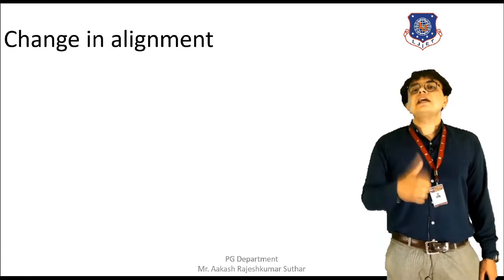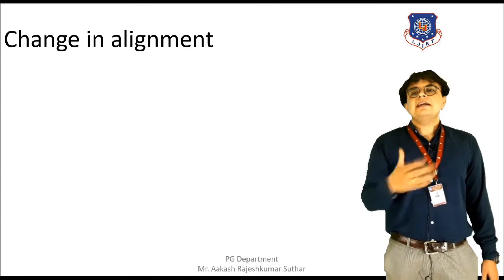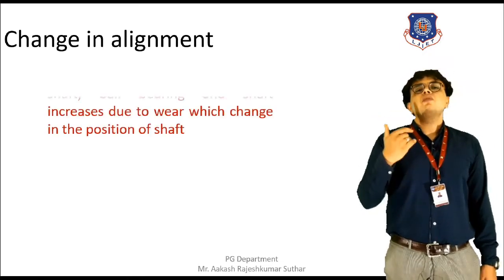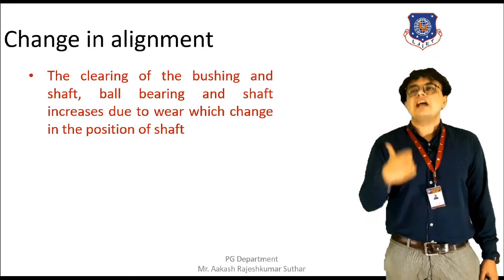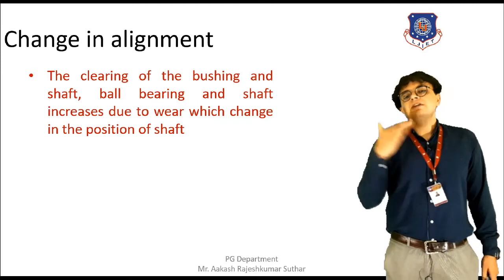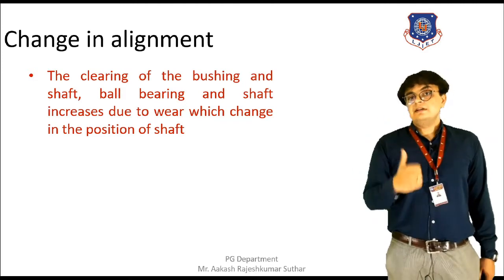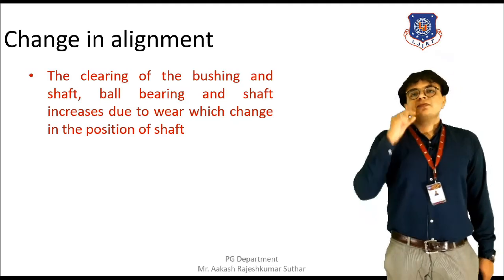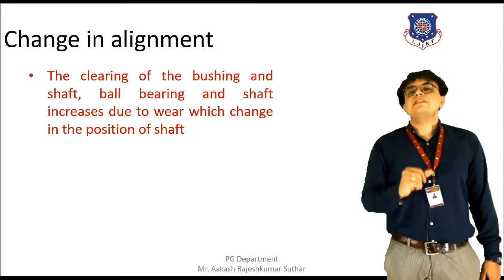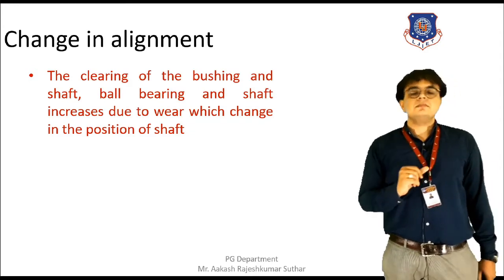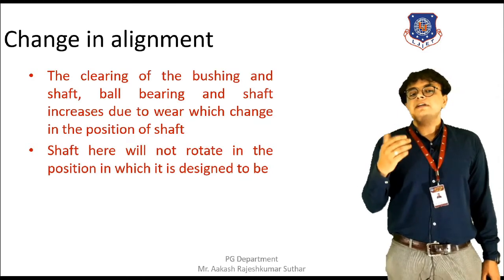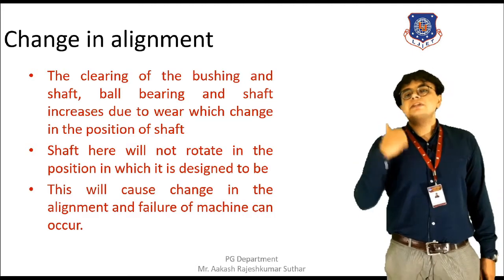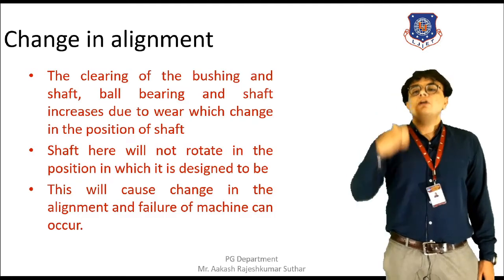Next is change in alignment. In the machine there are spacings — spacing between the shaft, spacing between the gears and between many other components. This is what alignment is: it is nothing but the clear distance between the bushing and the shaft, ball bearing and the shaft. When modification between them takes place, wear will occur. Chances of wear can occur when the distance between these components varies from what has been designed. The shaft will not rotate in its proper designed position, and ultimately the alignment of the machine will get changed.